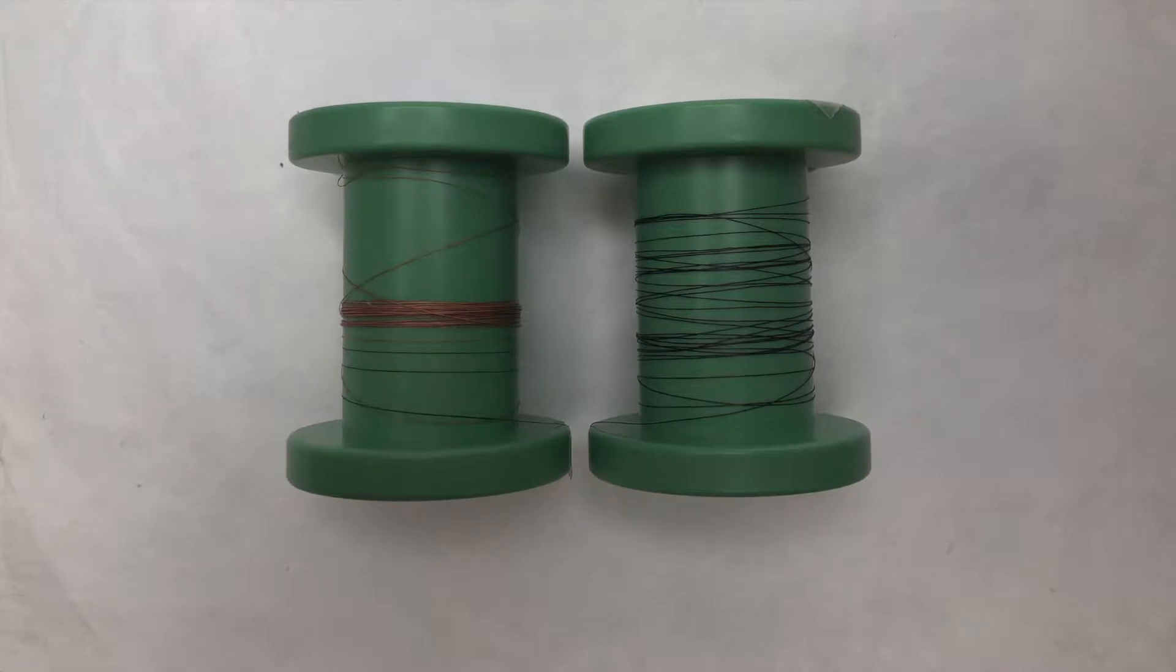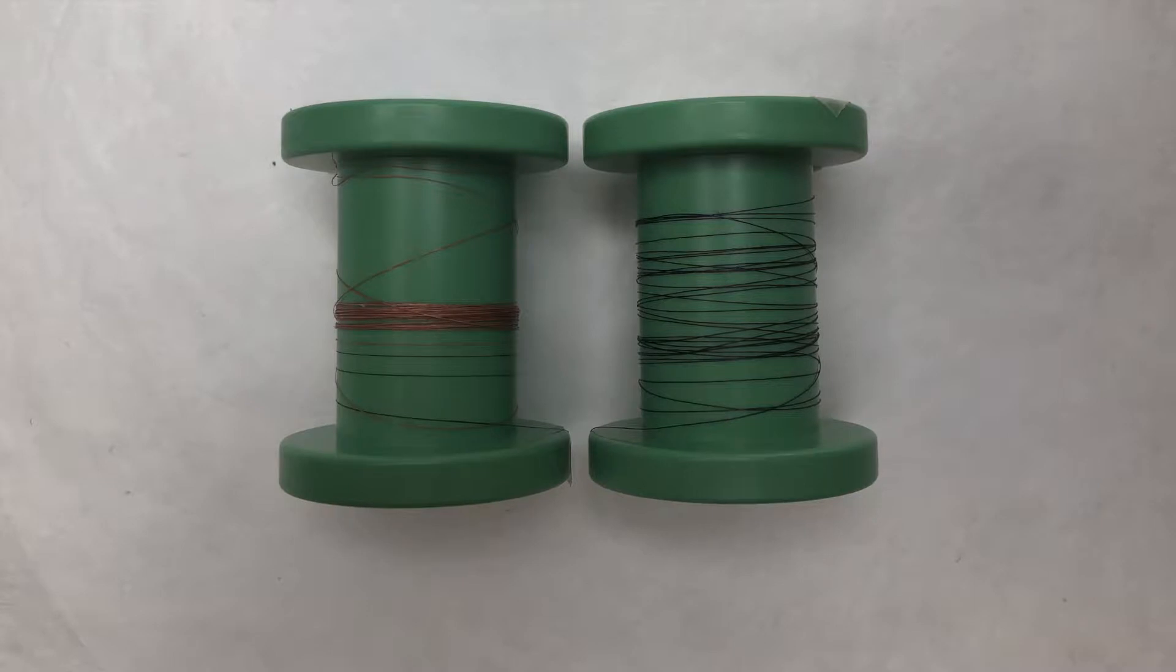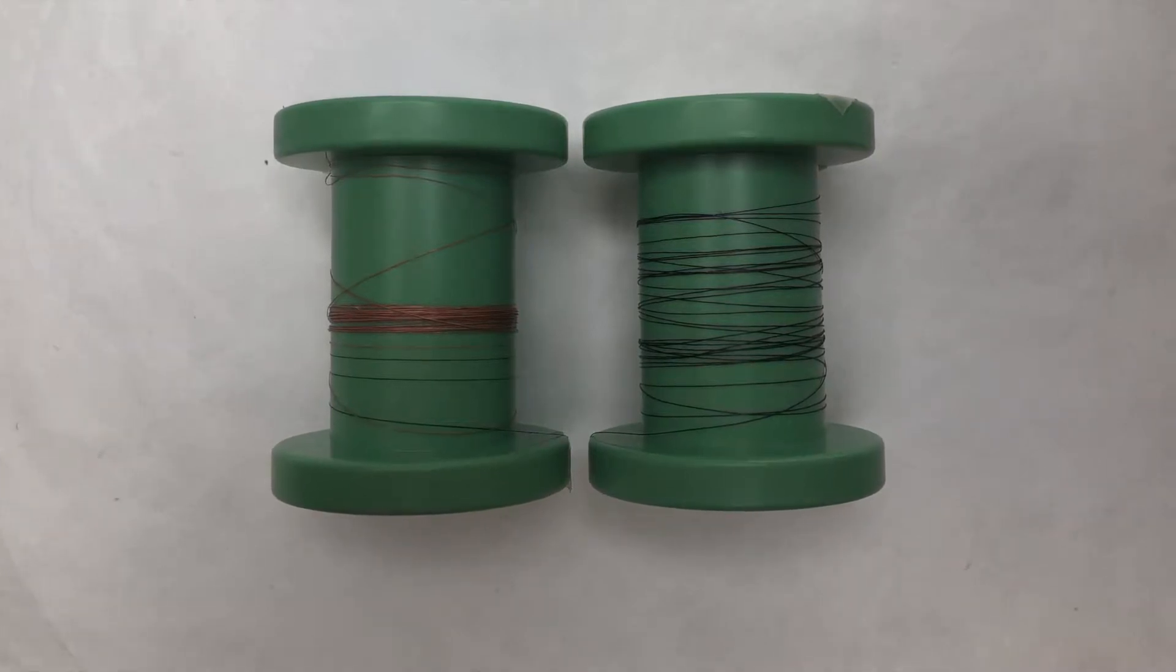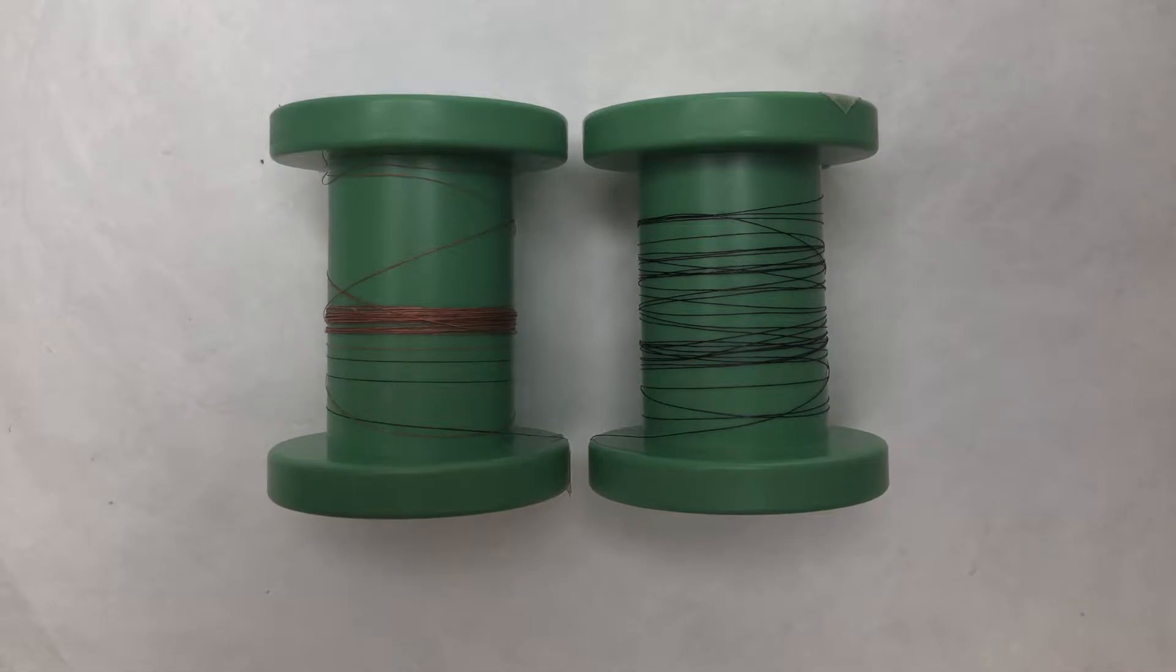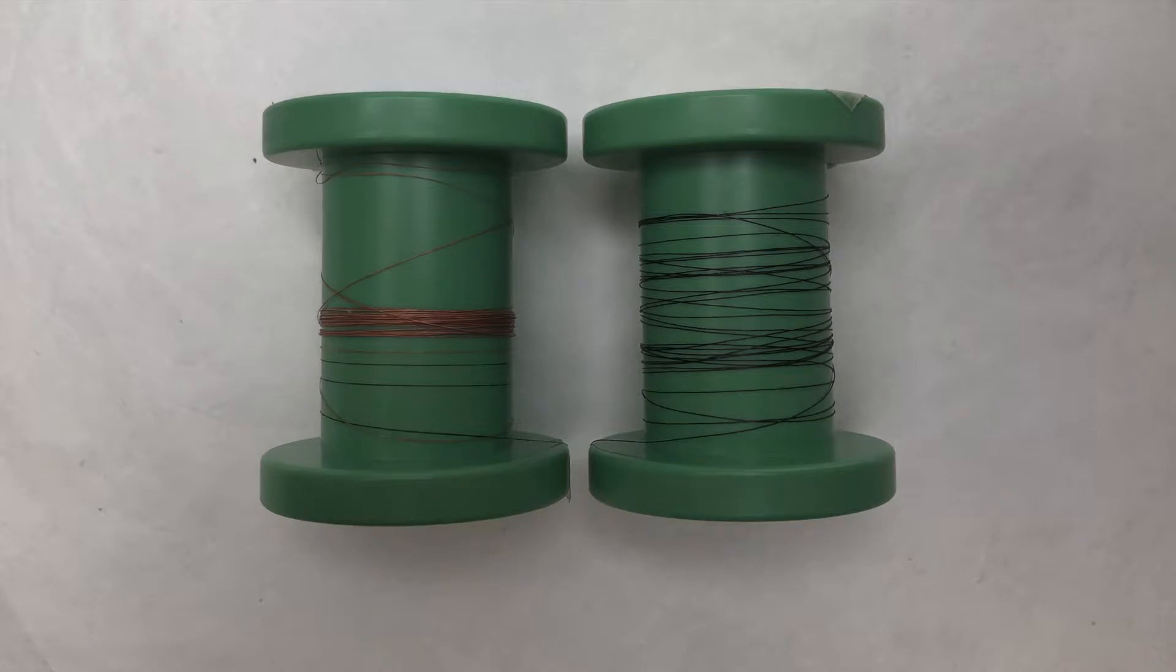So here you can see the spool on the right is our normal carbon nanotube yarn, and the spool on the left is the same carbon nanotube yarn coated in a layer of copper, which gives it that metallic orange color. Next I'll give you a quick look at the process that we use to apply this layer of metal onto the yarn.